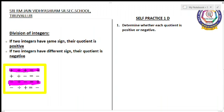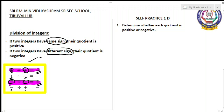If two integers have the same sign, then your quotient will be positive. If two integers have a different sign, then your quotient will be negative. You can see this in the box. If both integers are positive, or both are negative, your answer will be positive. If one integer is positive and the other is negative, your quotient will be negative.